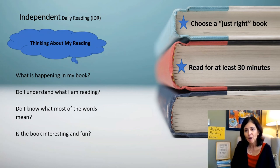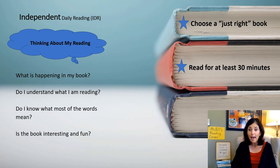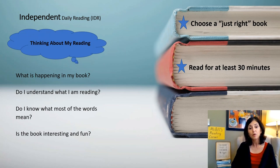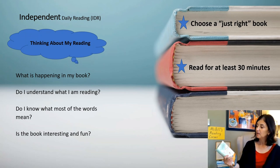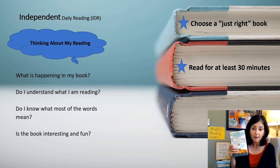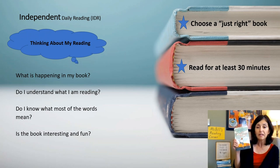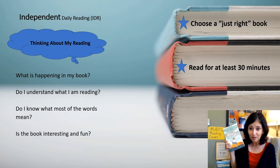Now we've reached the part of reading time that might be your favorite part — independent daily reading, what we call IDR. As you're reading your independent book, I want you to think about the following: ask yourself, what is happening in my book? Do I understand what I'm reading? Do I know what most of the words mean? And is the book interesting and fun? Today I'm starting a new book called 'The Remarkable Journey of Coyote Sunrise' by Dan Gemeinhart — a former elementary librarian. A teacher-librarian friend recommended it to me. I've read several of his other books and I love his writing because he tells great adventure stories. Let's get started reading, everyone, and have a great day!